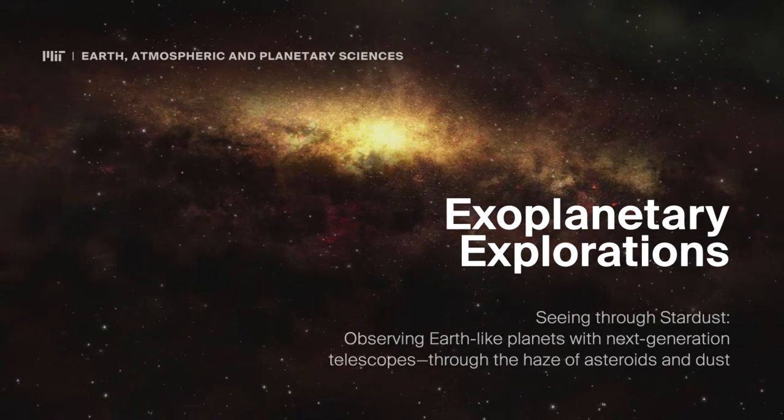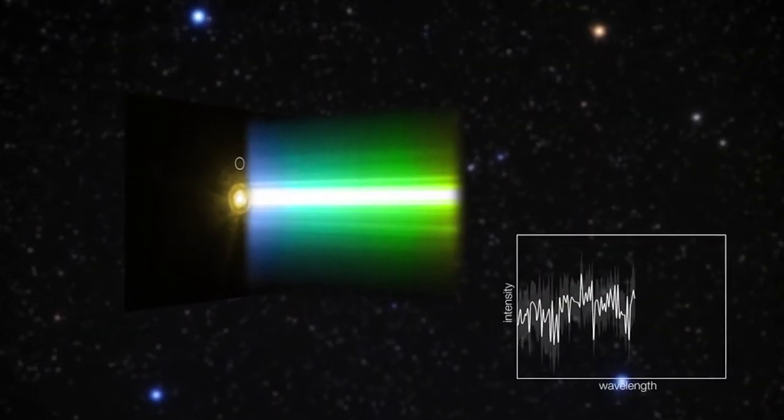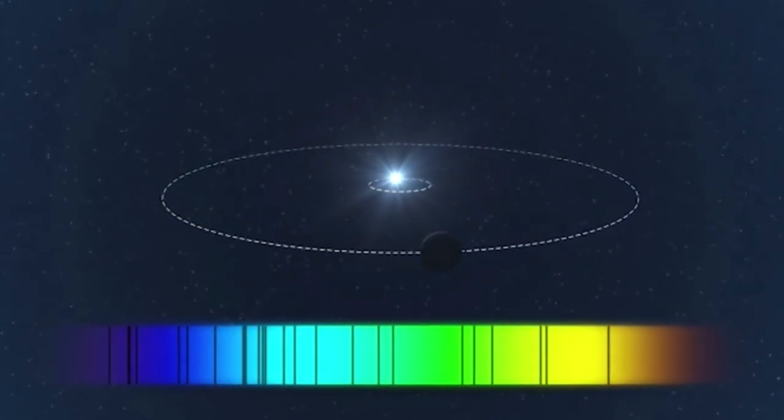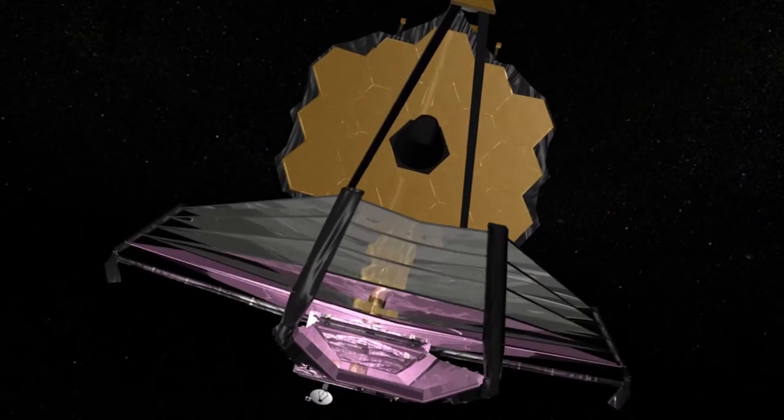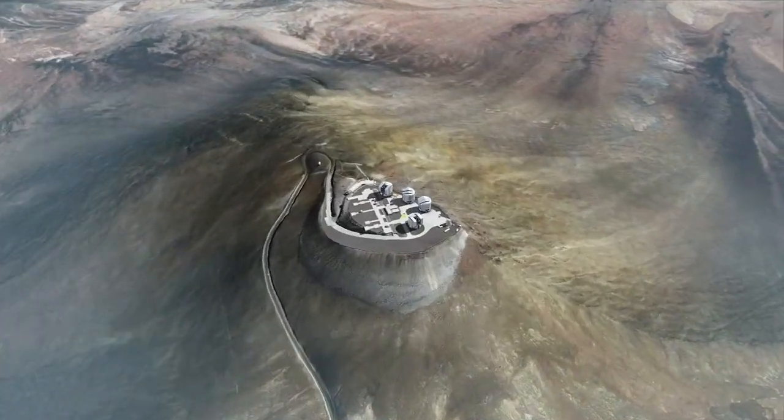I'm Tajana Schneiderman. I am a third-year graduate student in the Department of Earth Atmospheric and Planetary Sciences here at MIT, and I'm specifically interested in looking at the direct imaging of exoplanets, trying to understand how we can interpret the signals we get from some next-generation space telescopes, as well as next-generation Earth-based observatories.